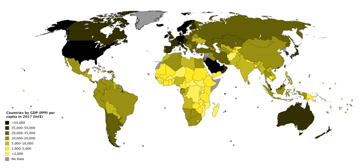Examples of consumption include food, rent, jewelry, gasoline, and medical expenses, but not the purchase of new housing. Investment (I) includes business investment in equipment, but does not include exchanges of existing assets. Examples include construction of a new mine, purchase of software, or purchase of machinery and equipment for a factory. Spending by households on new houses is also included in investment.